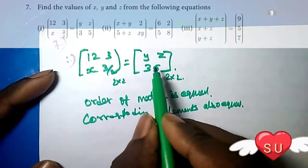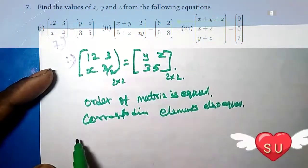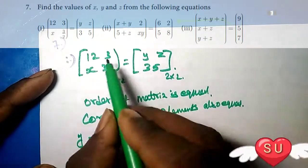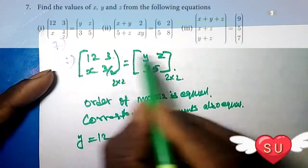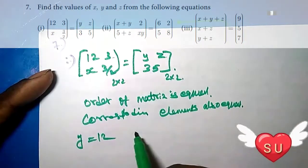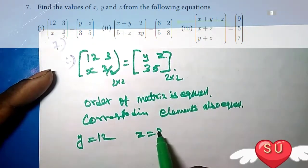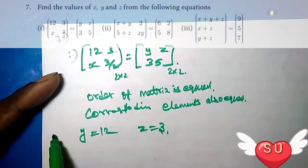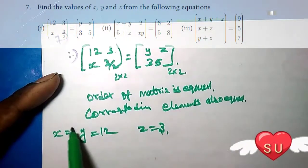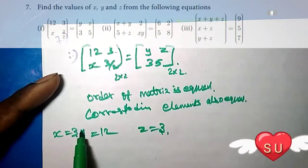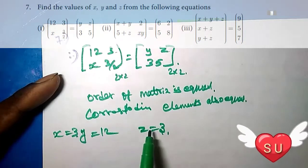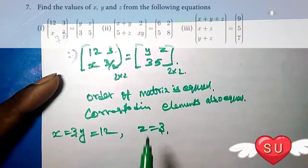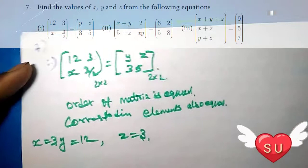Here is y, so y is equal to 12. Next, the side element gives z equal to 3. Next, x is equal to 3. Therefore x equals 3, y equals 12, z equals 3. This problem is easier.